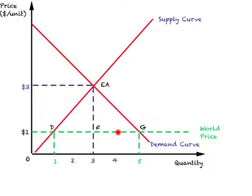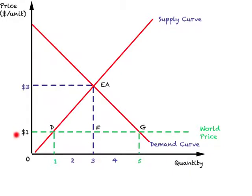This green horizontal line represents the world price, or the free trade price. At this price, if this country decides to engage in foreign trade, how much will be supplied by the domestic sellers? It will be one unit. And how much will be demanded by local consumers? It will be five units. So domestic supply is one, domestic demand is five, and this country must be importing four units from the world market at one dollar.